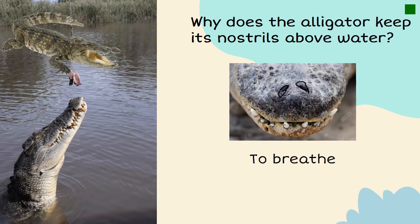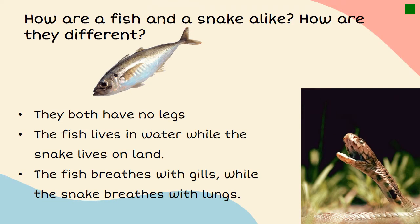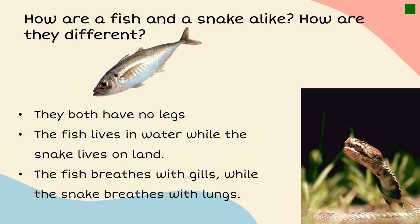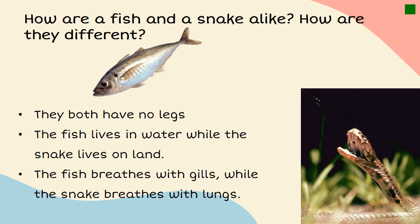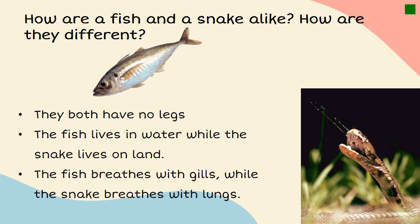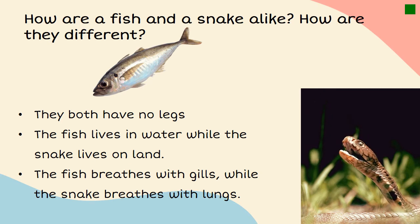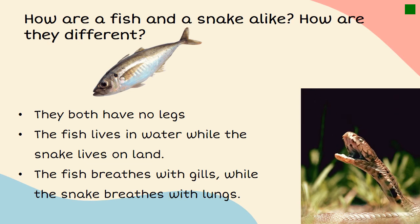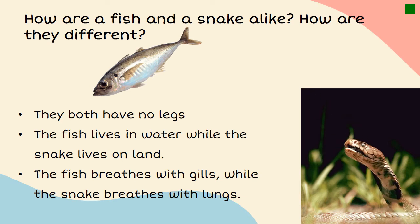How are a fish and a snake alike? They both have no legs. How are they different? The fish lives in water while the snake lives on land. Also, the fish breathes with gills while the snake breathes with lungs, because a snake is a reptile.